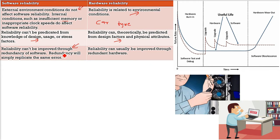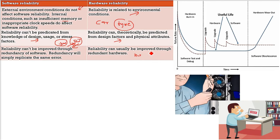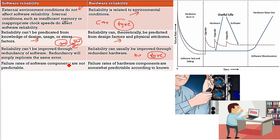Software reliability cannot be improved using redundancy. If you have two copies of software and one fails, you might use the other — but whatever error comes in the first software will definitely come in the second software as well. In hardware, if one part is failing and you have redundancy, you can just replace it with an extra hardware component. For example, you can have a spare tire if one tire gets a blowout.